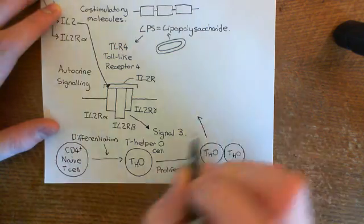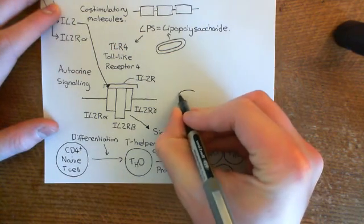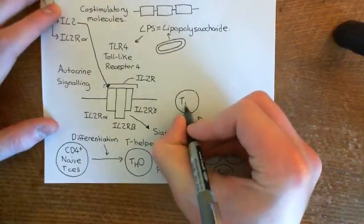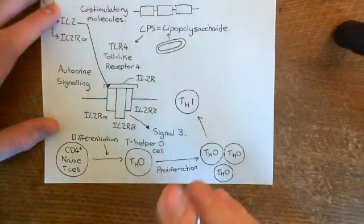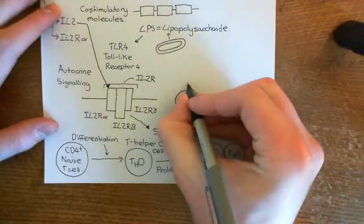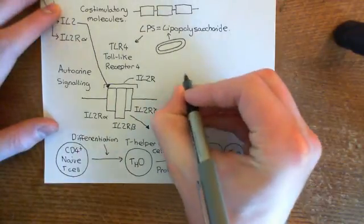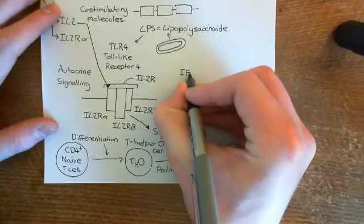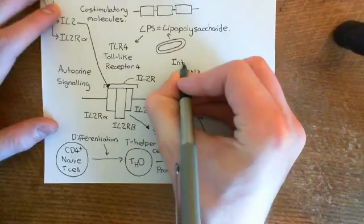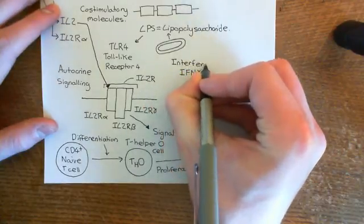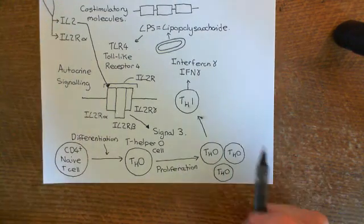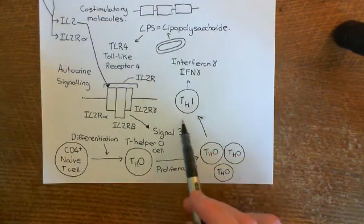The old story was that these T-Helper nought cells then differentiated into T-Helper 1 cells, and you therefore ended up with a huge number of T-Helper 1 cells in the synovial joint, and they released cytokines such as interferon gamma, which was then responsible for triggering the degradation of the bone. However, this story is gradually being faded out.